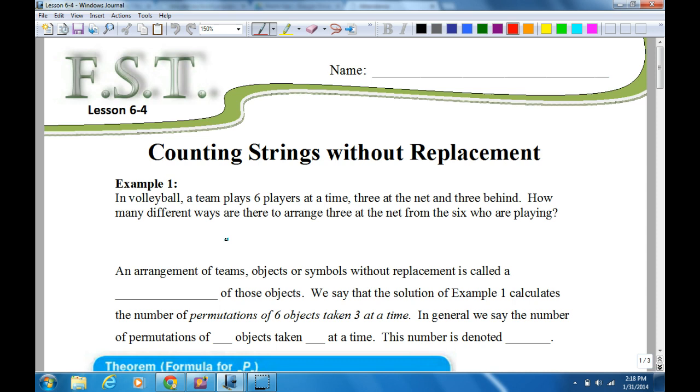For the first one, in volleyball a team is made up of six players at a time. Three are at the net and three are behind. How many different ways are there to arrange three at the net from the six who are playing? So the first person I pick, how many do I have to pick from? Six. But I'm not putting that person back in. I've already taken them out of the line. So how many do I have to pick from on the second? Five. How many do I have to pick from from the third? Four. So there's only three spaces that I need to look at. If I multiply these three together, I get 120 different arrangements.